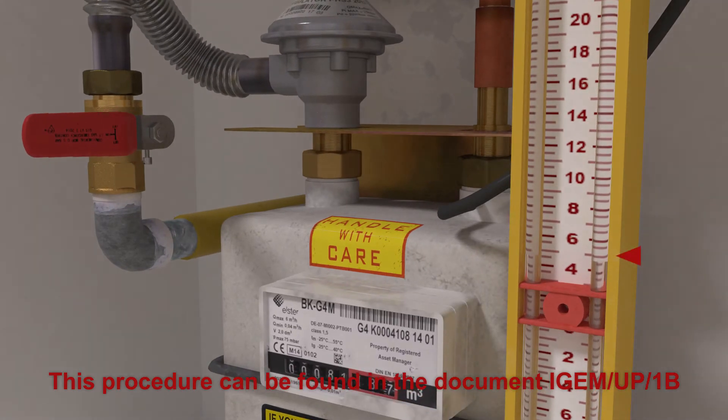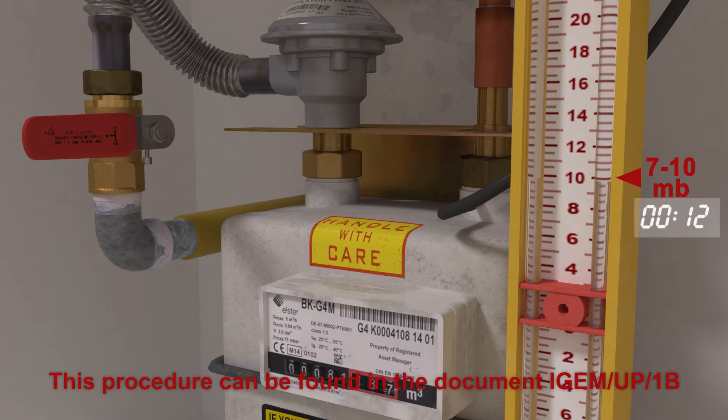Raise the pressure to 7 to 10 millibar for one minute to test the let-by of the ECV. If let-by is suspected, disconnect the regulator and apply leak detection fluid, LDF, inside the ECV. If let-by is present then contact the gas transporter.